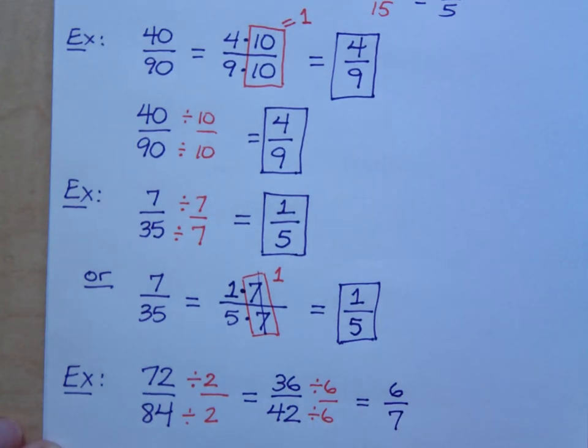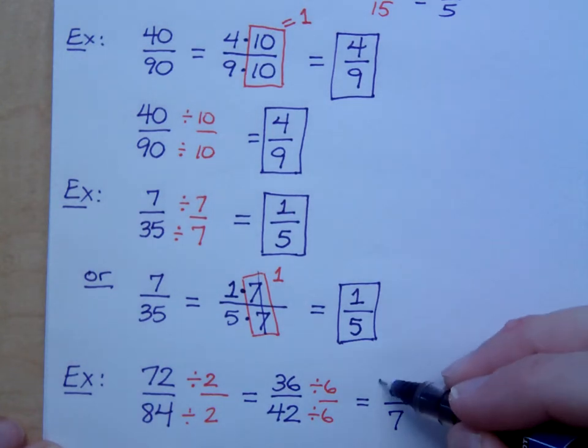Now what about six and seven? Can I do more with that? No, because six and seven are, what was that fancy phrase? Relatively prime. They have no common factors other than one, so you are done.